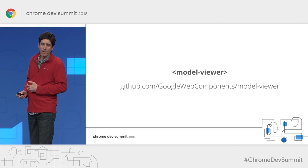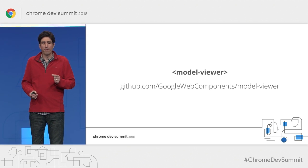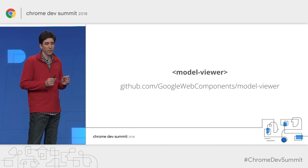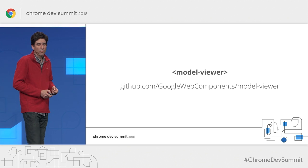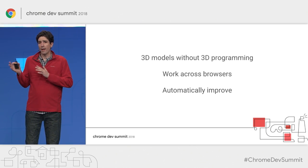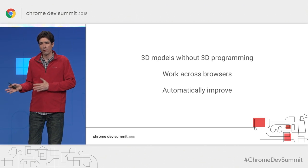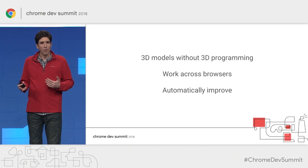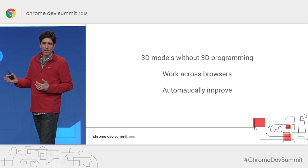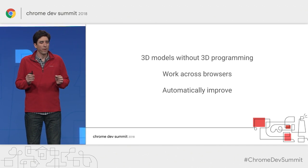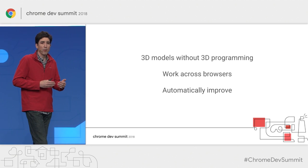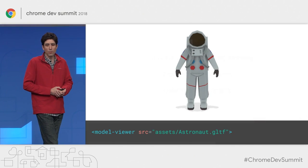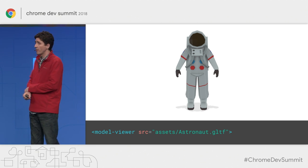To address that, the team has been looking at this problem and recently made public an early version of a 3D model viewer web component. This is really early, but it does some things today to make life easier, and the reason we released it early was to get your feedback. There are three goals: first, you should be able to add 3D models to your site without learning 3D programming; second, it should work well and responsibly across browsers and device form factors with progressive enhancement; and third, as new APIs ship like the WebXR Device API, the component should take advantage of them so you don't have to keep up with all the changes.